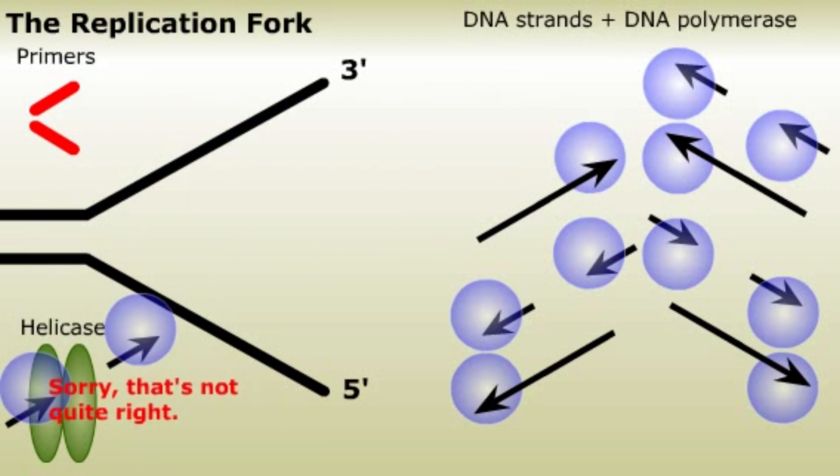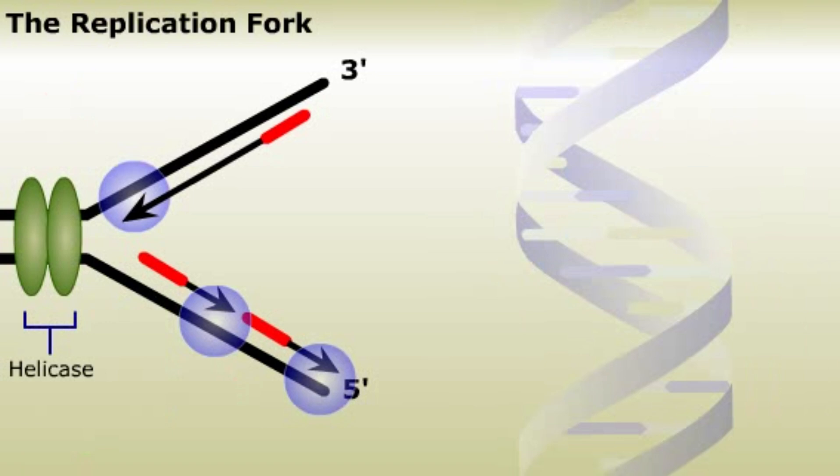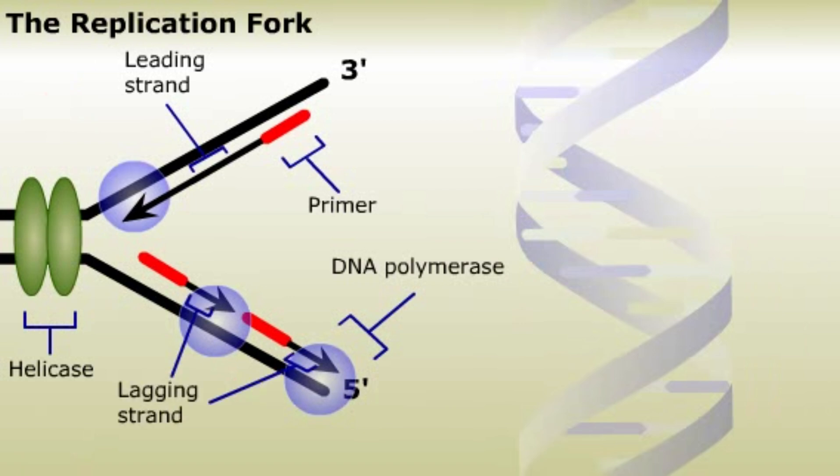Sorry, that's not quite right. Helicase unwinds and separates the DNA at the base of the fork. A primer is needed to begin replication. DNA polymerase adds nucleotides to the growing strand in the 5' to 3' direction. This means the leading strand is elongated in one piece while the lagging strand is composed of small pieces of DNA, the Okazaki fragments.